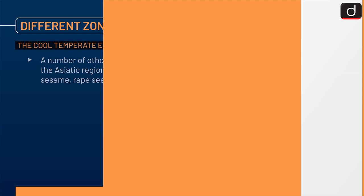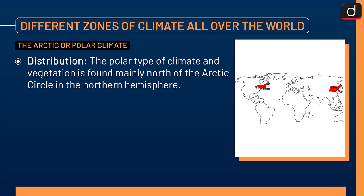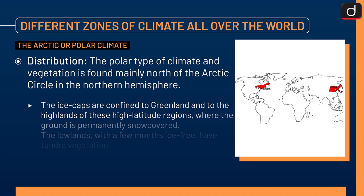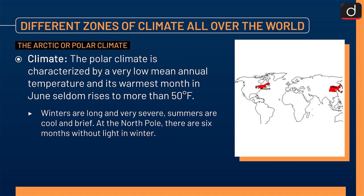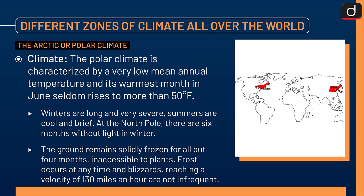The next zone is the Arctic or polar climate. Distribution: the polar type of climate and vegetation is found mainly north of the Arctic Circle in the Northern Hemisphere. The ice caps are confined to Greenland and to the highlands of these high-latitude regions where the ground is permanently snow covered. The lowlands with a few months ice-free have tundra vegetation. Climate: the polar climate is characterized by a very low mean annual temperature, and its warmest month in June seldom rises to more than 50°F. Winters are long and very severe. Summers are cool and brief. At the North Pole, there are six months without light in winter. The ground remains solidly frozen for all but four months, inaccessible to plants. Frost occurs at any time and blizzards reaching a velocity of 130 miles an hour are not infrequent. Precipitation is mainly in the form of snow falling in winter.